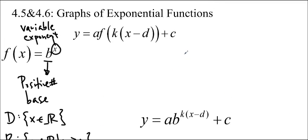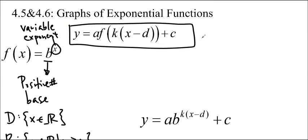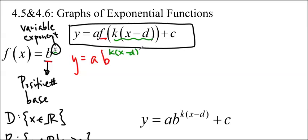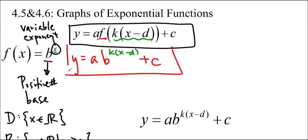We can also perform transformations on exponential functions. If you see y equals af(kx minus d) plus c, that's the transformation of any function. And if we just replace f with b, this becomes y equals a times b to the (kx minus d), plus c on the outside. That is what our transformations are going to look like.